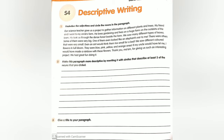We saw different colored flowers. Underline: colored; circle: flowers in full bloom. They were blue, pink, yellow, and orange. Underline: blue, pink, yellow, orange. If my uncle would have let me, I would have made a rainbow with these flowers. Circle: uncle, rainbow, flowers. Thank you, ma'am, for giving us such an interesting project. Circle: ma'am; underline: interesting; circle: project. We had great fun doing it.